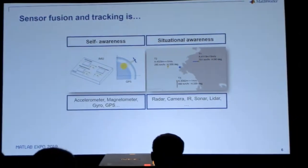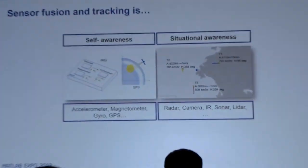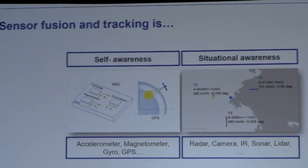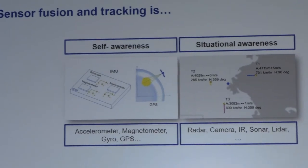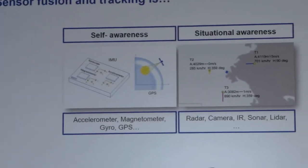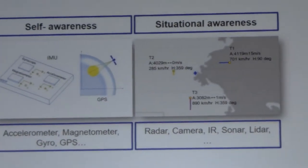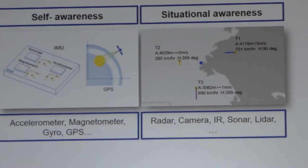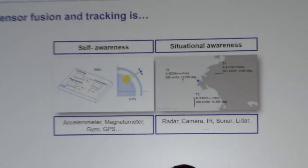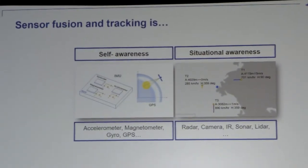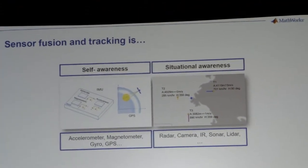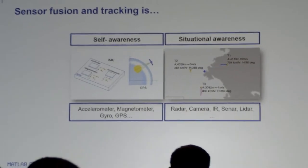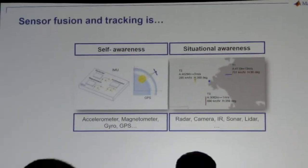When we talk about sensor fusion and tracking, we're really talking about two things. Self-awareness — that is, what is the platform doing? Its position, orientation, pose. We look at sensors like inertial measurement units, altimeters, and GPS as the inputs that help determine that position and orientation.